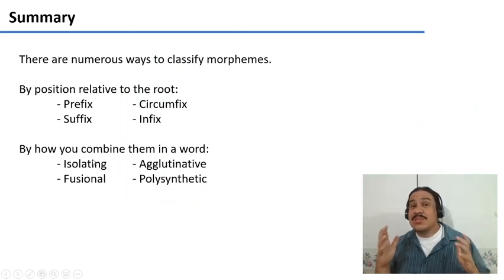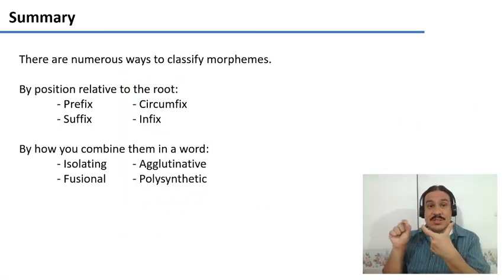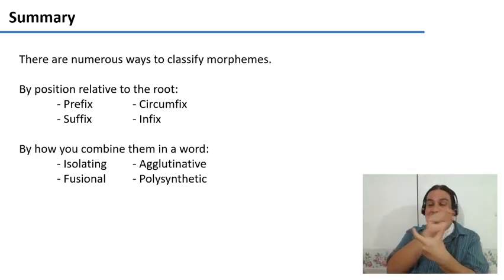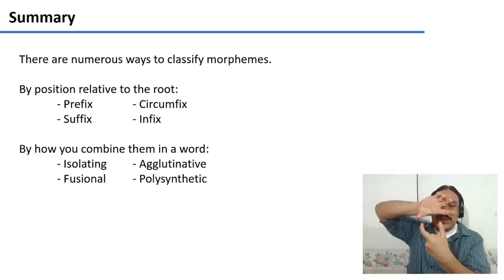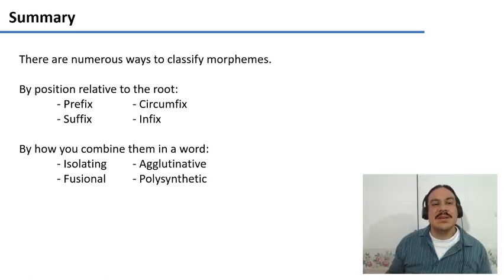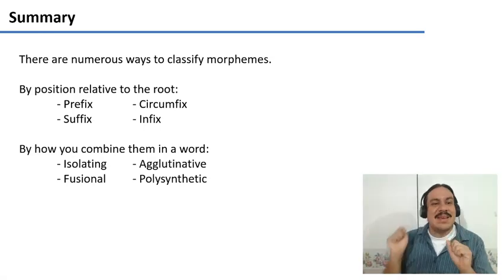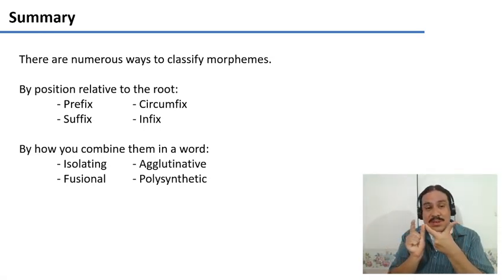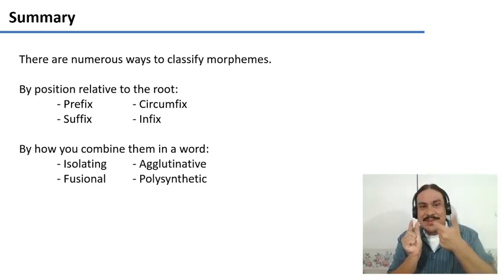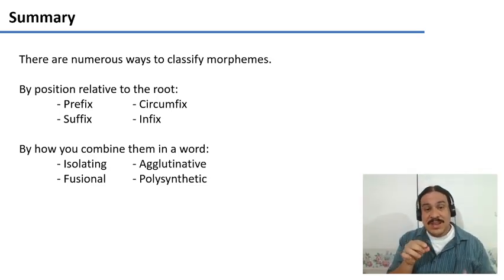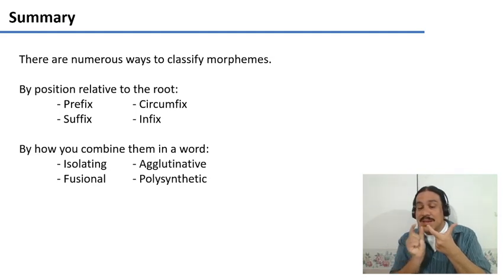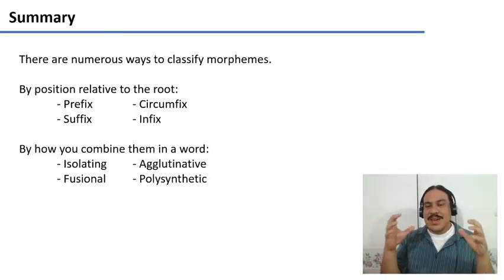In summary, there are many ways to classify morphemes. You can classify them by their position relative to the root: before as a prefix, after as a suffix, around as a circumfix, or inside as an infix. You can also describe a language by how it clusters morphemes. An isolating language tends to have one word per morpheme. A fusional language has morphemes with many meanings packed inside them. Agglutinative languages have many morphemes each with a single meaning, like Lego pieces. And polysynthetic languages have several roots and affixes in a single word.